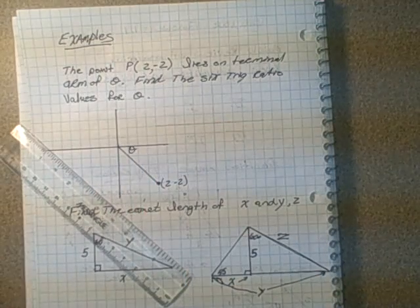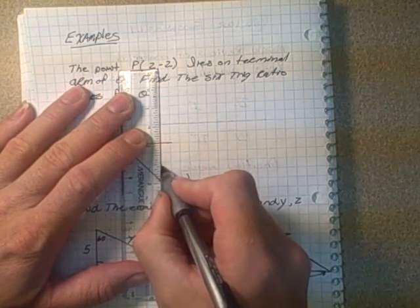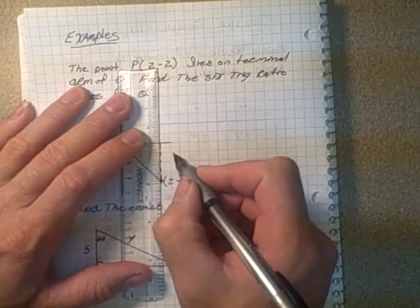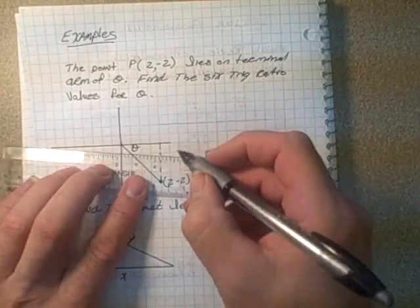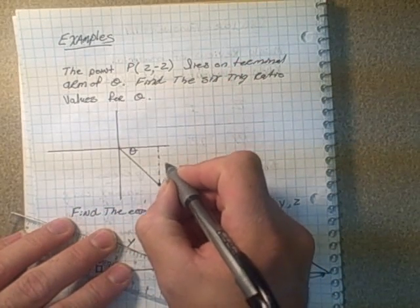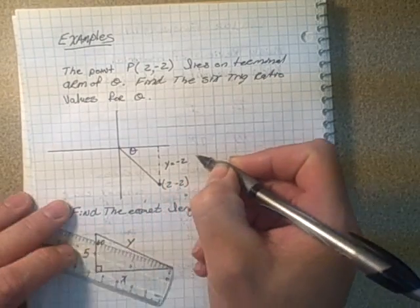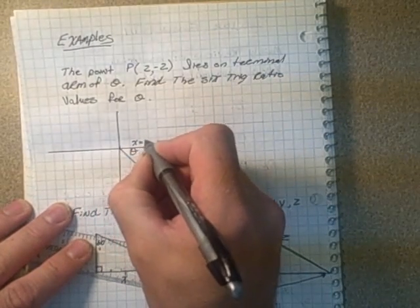So if I were to refer that as my angle here, there's my theta value. Remember, I'm drawing my reference angle with the x-axis. Therefore, here is our values. There is a value for y, and that's going to equal negative 2. And a value for x, and that's going to equal 2.